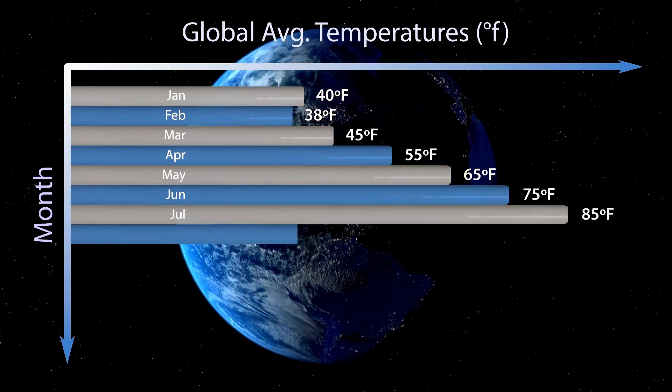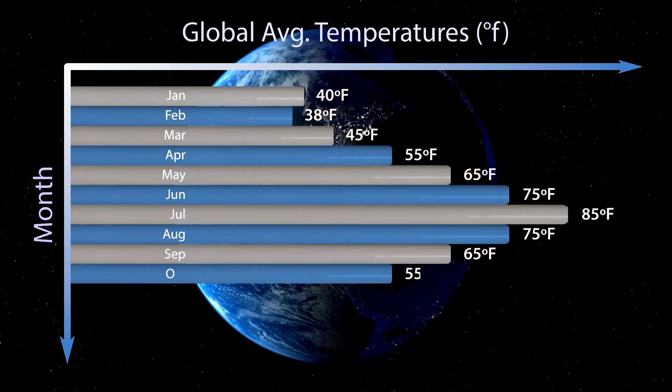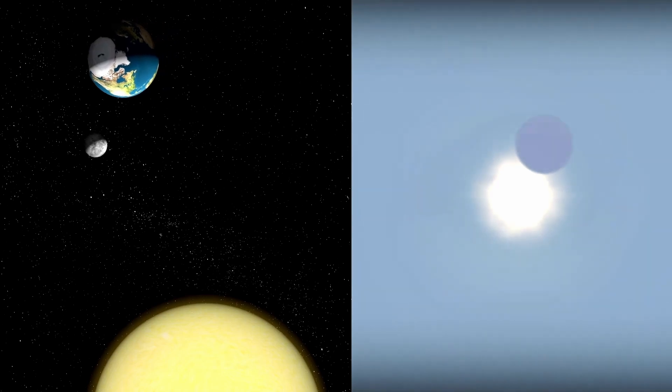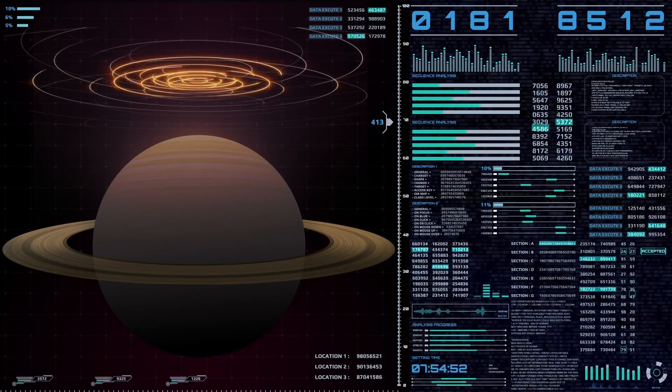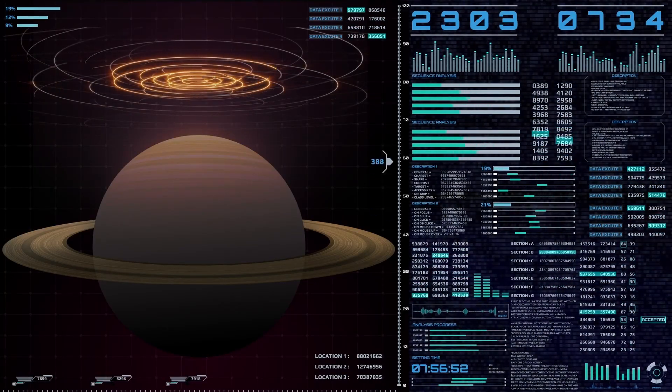Such as water, methane, oxygen, and carbon dioxide, all potential indicators of life. These molecular fingerprints give us our first real chance to determine whether a planet might support biology as we know it, or perhaps life forms beyond our current understanding.